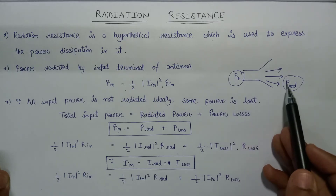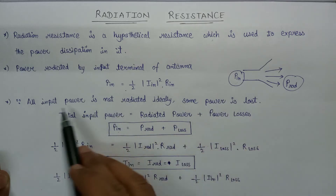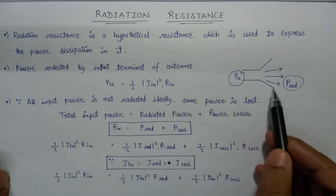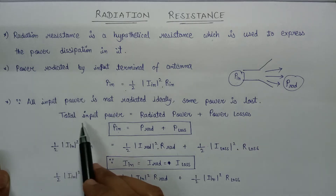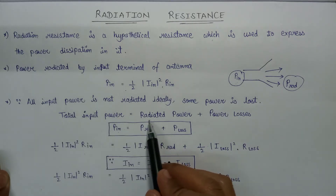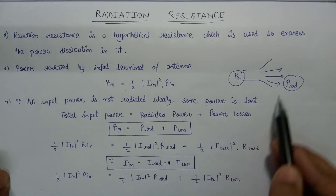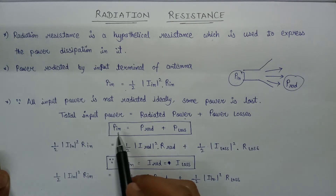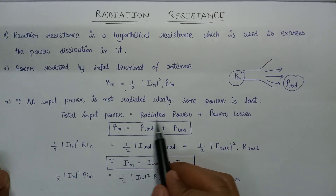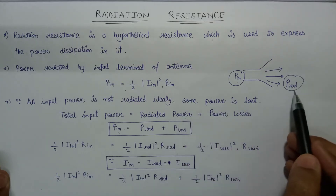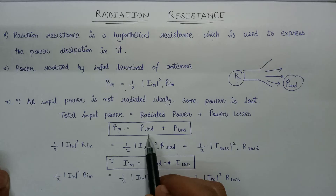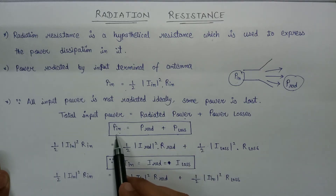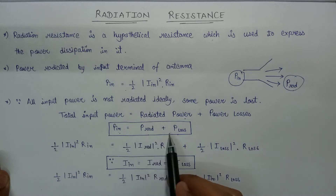Since not all the power supplied to an antenna is radiated ideally, some amount of power is lost by the structure of the antenna. That's why the total input power equals the sum of radiated power and the power losses due to conduction as well as dielectric losses. So we can say that P_input equals P_radiated plus P_losses.